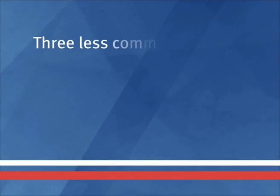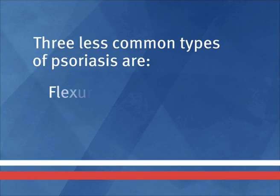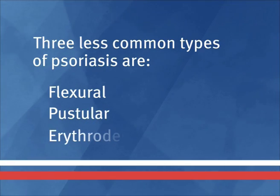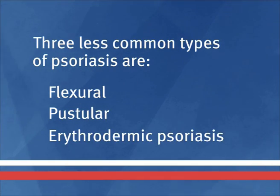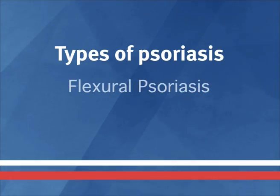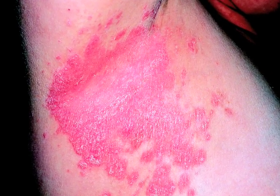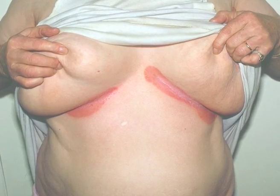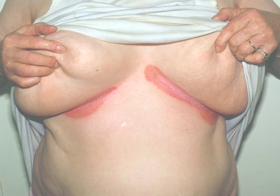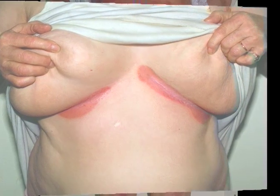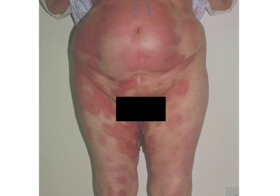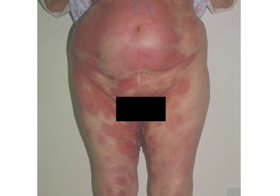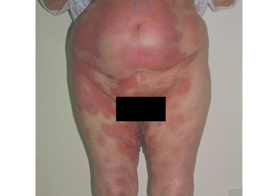Three less common types of psoriasis are flexural, pustular and erythrodermic psoriasis. Flexural psoriasis is characterized by smooth glazed plaques which occur in folds or flexures of skin such as the armpits, groin, skin under the breast or between the buttocks. Genital psoriasis occurs in a third of patients. This form can sometimes be confused with other types of skin conditions such as fungal infections.